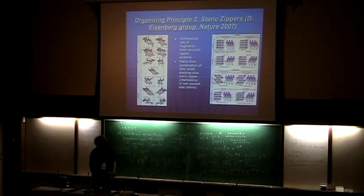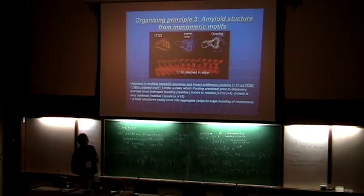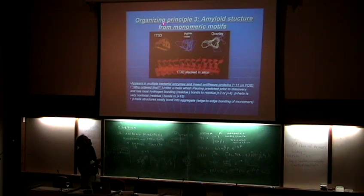Finally, another organizing principle is to look for the amyloid structure from already existing monomeric motifs. Domain swapping actually provides an example, because you have beta sheet motifs in those SH3 domains. One thing that we've been particularly fascinated with are these beta helical structures.